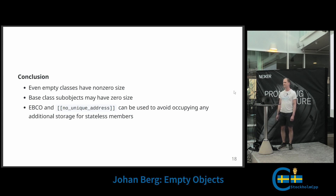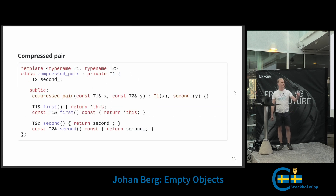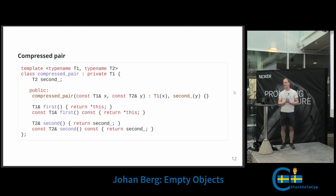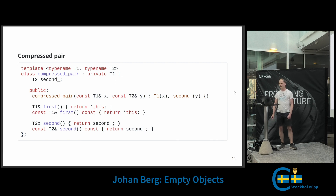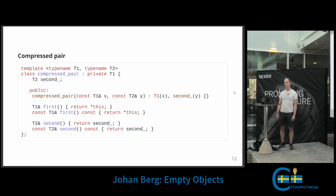For the compressed pair, can't you just inherit both of the types? Yeah, I tried to make a very simplified example here, but this has some problems — if T1 is a final class, for example, you can't inherit from final. So a real implementation would need some specialization and use a concept to say: if T1 is empty and not final, inherit from T1; if T2 is empty and not final, inherit from it; and inherit from both if you want. Boost has an implementation of compressed pair that you can look at.